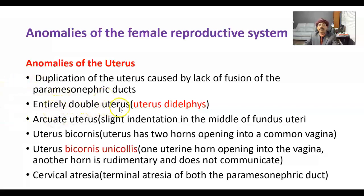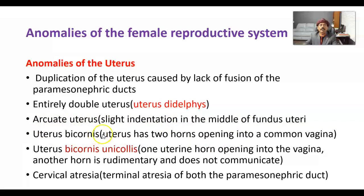There may be an entirely double uterus, called uterus didelphys. An arcuate uterus shows a slight indentation in the middle of the fundus of the uterus. Uterus bicornis, also called bicornuate uterus, means the uterus has two horns opening into a common vagina.